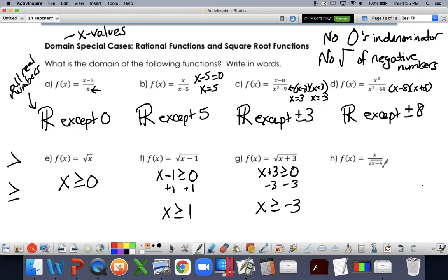Now in our last example, because the square root is in the denominator, not only do I need x minus 4 to be greater than 0, it cannot be 0. So I cannot say greater than or equal to here. It can only be greater than 4. That was a tricky one.